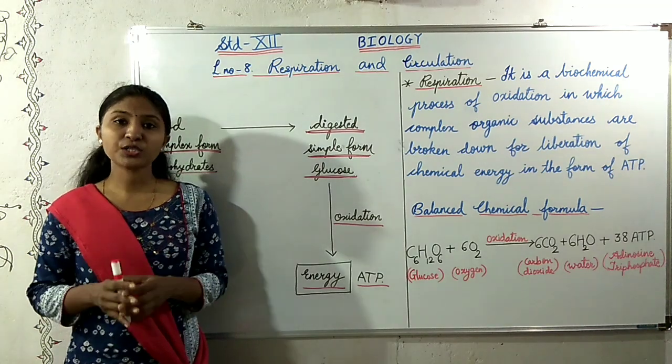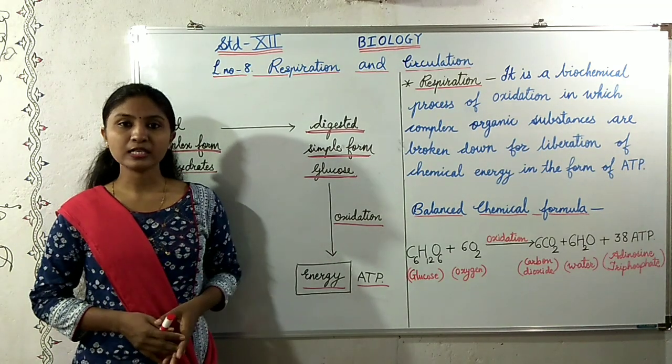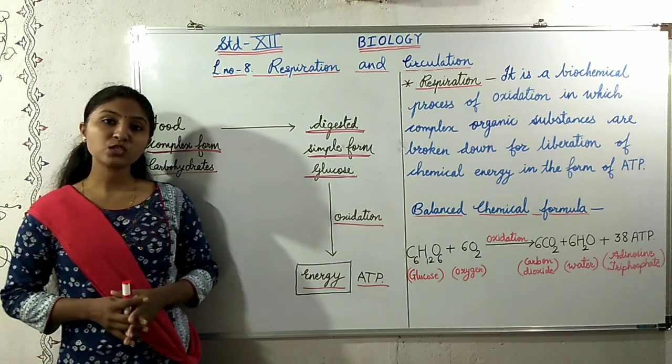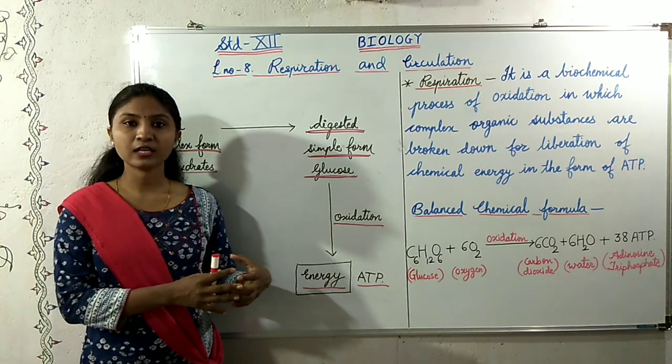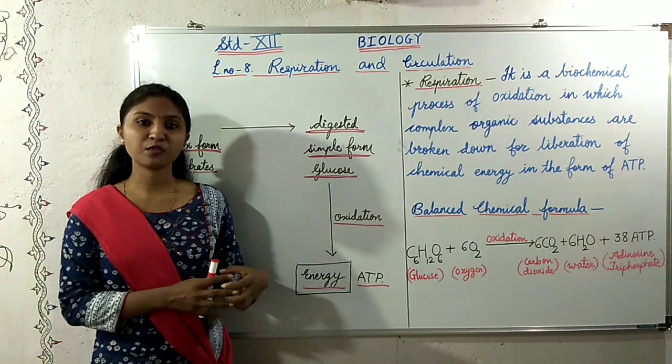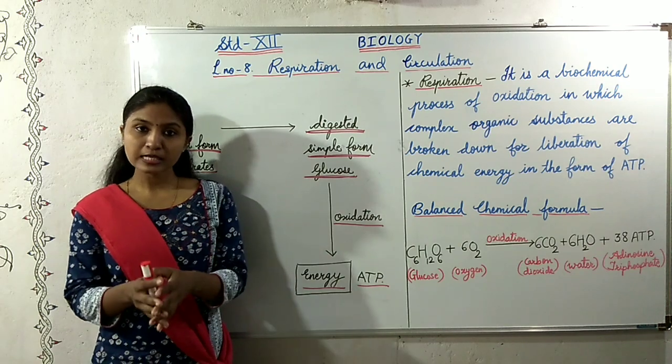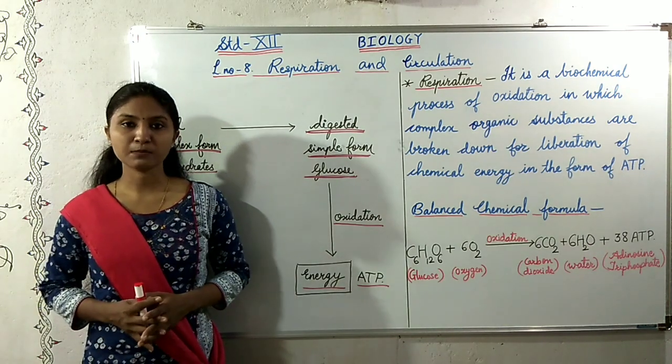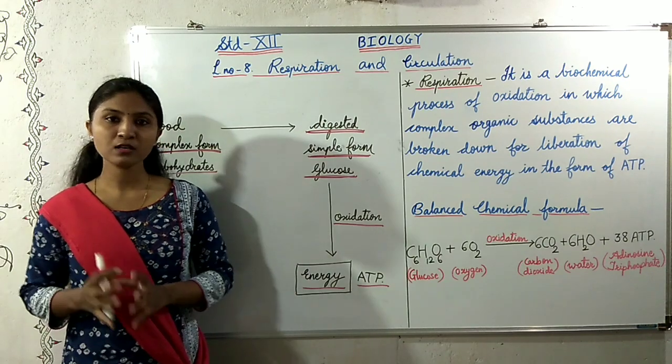Now comes the question, from where do we get this energy? So basically the food that we consume gets oxidized in our body. After oxidization our body derives energy from this food. This energy is stored in the form of complex organic substances in the food that we consume.